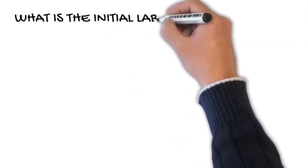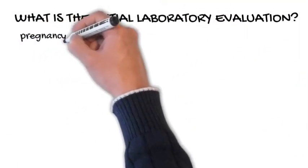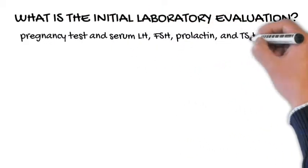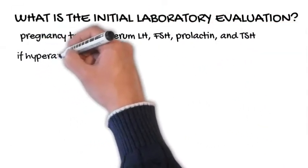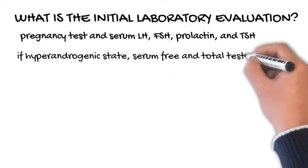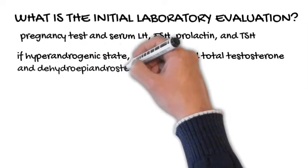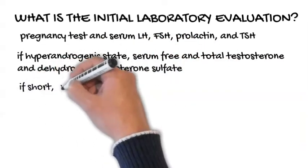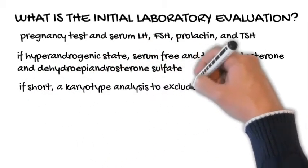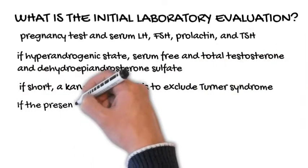What is the initial laboratory evaluation? The initial workup includes a pregnancy test and serum luteinizing hormone, follicle-stimulating hormone, prolactin, and thyroid-stimulating hormone levels. If history or examination suggests a hyperandrogenic state, serum free and total testosterone and dehydroepiandrosterone sulfate concentrations are useful.